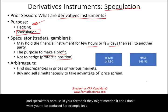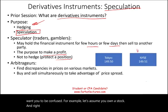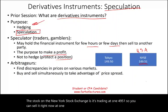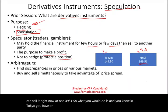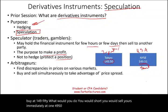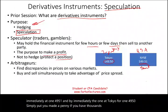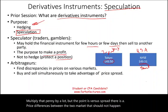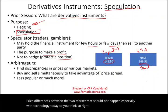For example, let's assume you own a stock and right now on the New York Stock Exchange, it's trading at 149.51 — so you can sell it at 149.51. And you know that in Tokyo, you have an account and the same security can be bought at 149.50. What would you do? You would sell yours immediately at 149.51 and buy the one in Tokyo for 149.50. Simply put, you made a penny. If you have thousands or millions of shares, multiply that penny by a lot. The point is there's a spread — a price difference between the two markets.